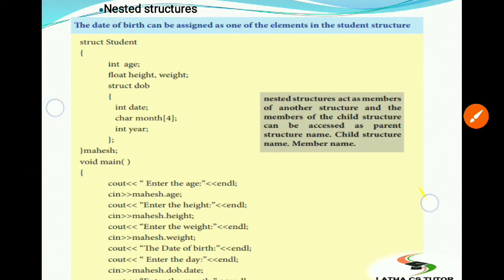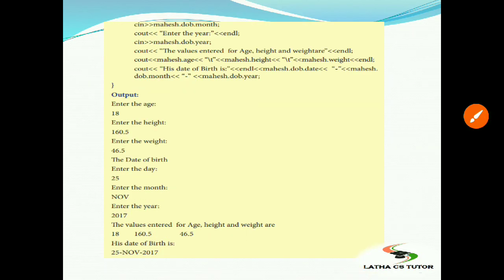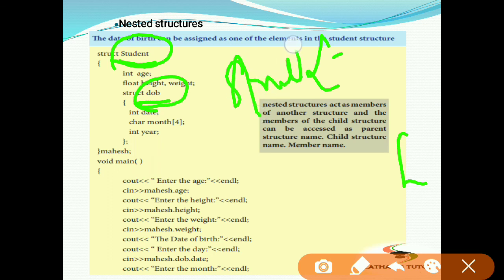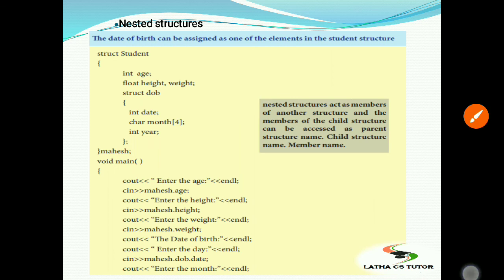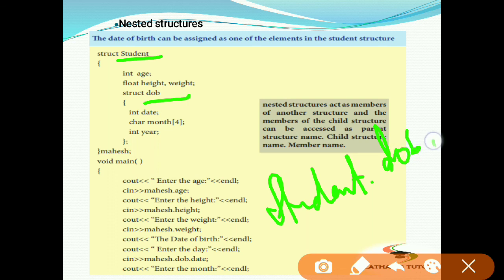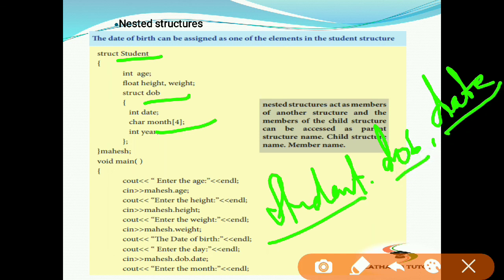Next is nested structures. When a structure consists of another structure inside its block, it is called nesting. To access a member of the nested structure, you use: outer structure variable dot inner structure variable dot member. For example: student.dob.date — outside structure name, dot, inside structure name, dot, member.